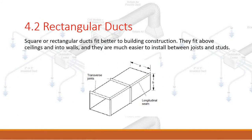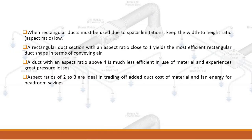Rectangular ducts. Square or rectangular ducts fit better to building construction — they fit above ceilings and into walls, and are much easier to install between joists and studs. When rectangular ducts must be used due to space limitations, keep the width-to-height aspect ratio low. A rectangular duct with an aspect ratio close to 1 yields the most efficient shape. A duct with an aspect ratio above 4 is much less efficient in use of material and experiences greater pressure losses.